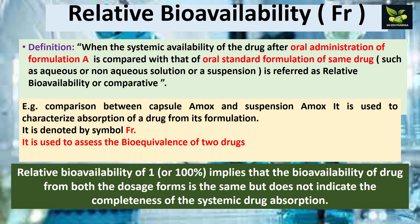Relative bioavailability is denoted by FR. When the systemic availability of any drug after oral administration of formulation A is compared with that of an oral standard formulation of the same drug — such as an aqueous or non-aqueous solution or suspension — it is called relative or comparative bioavailability. For example, comparing a capsule of amoxicillin with a suspension of amoxicillin. It is used to characterize the absorption of a drug from its formulation.